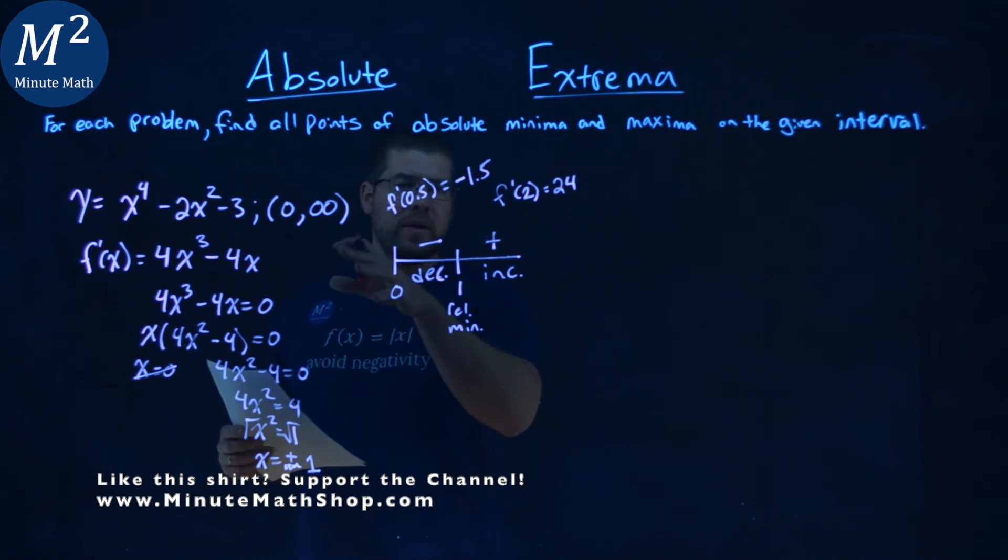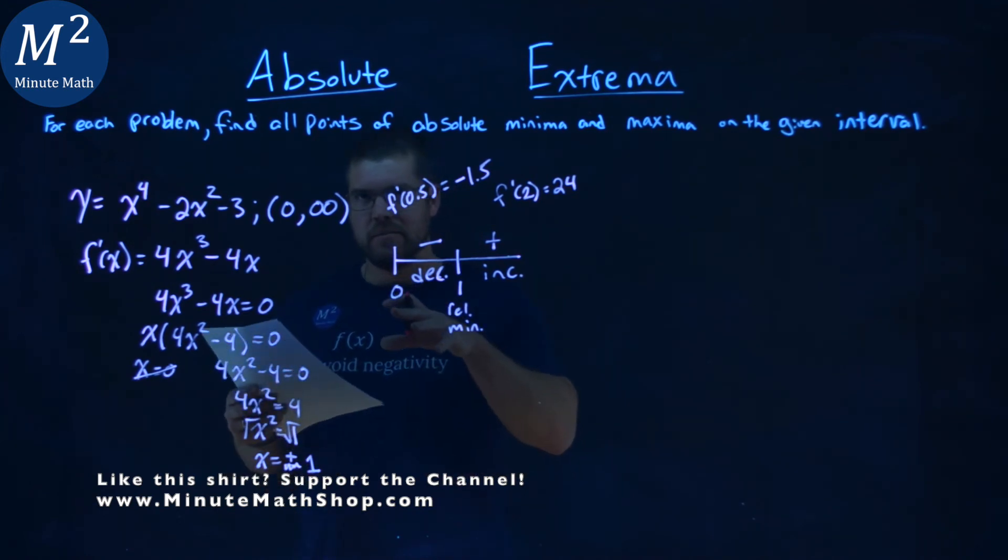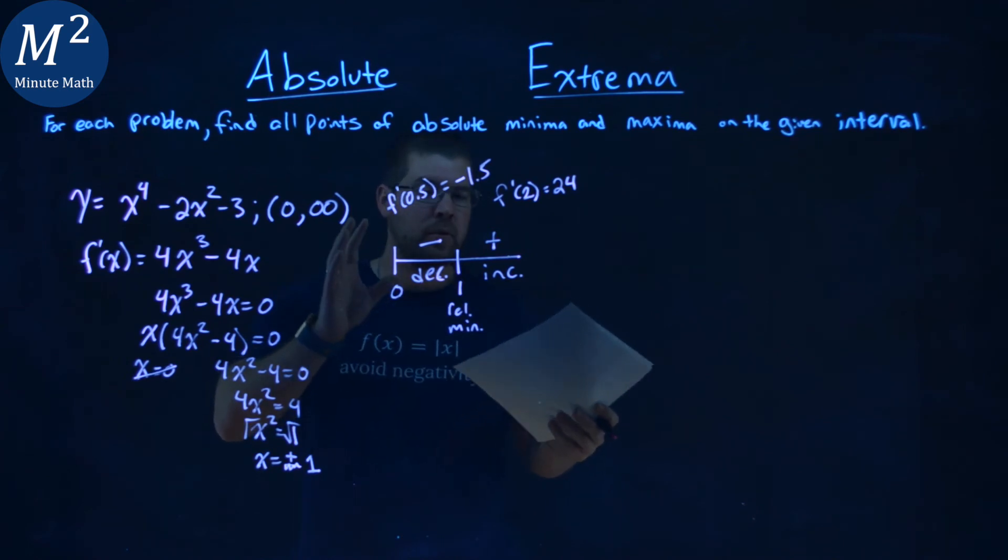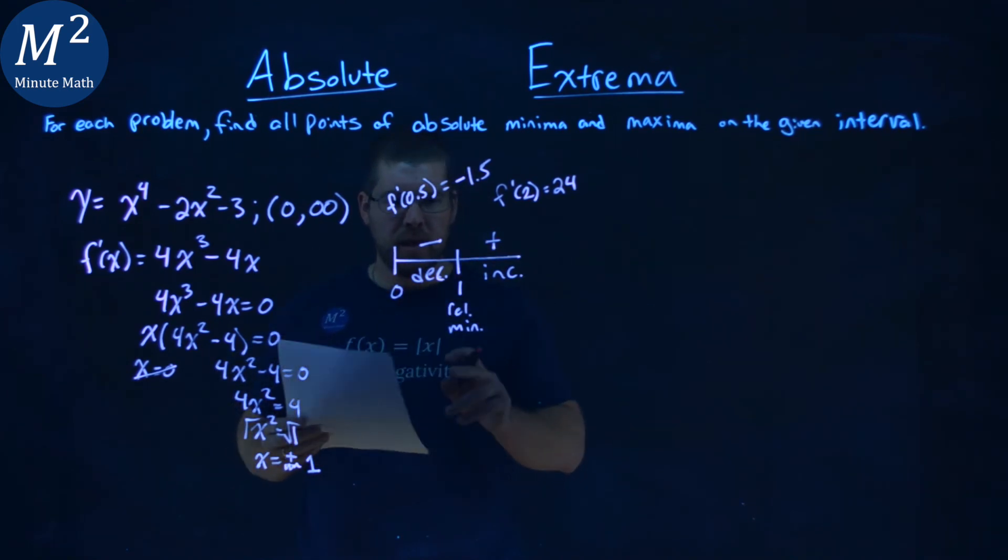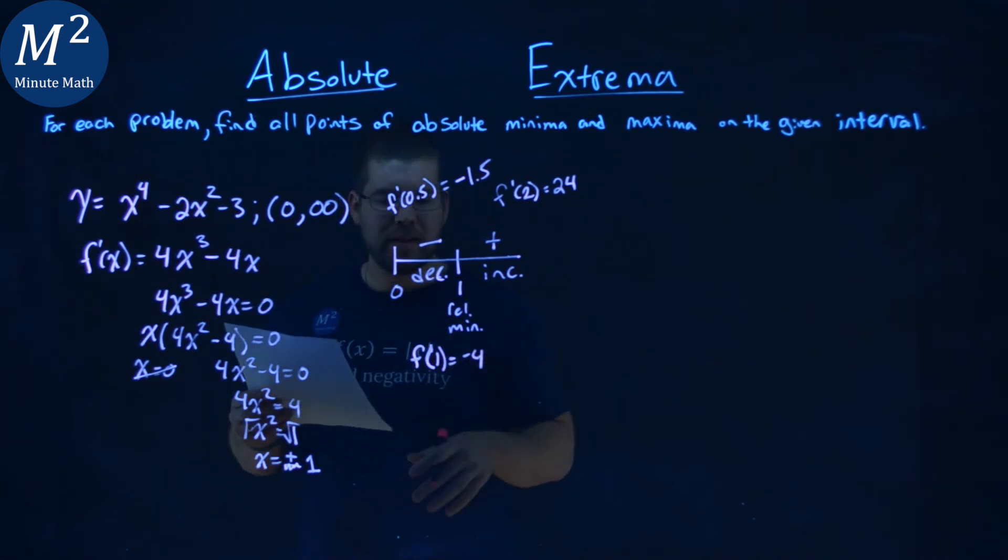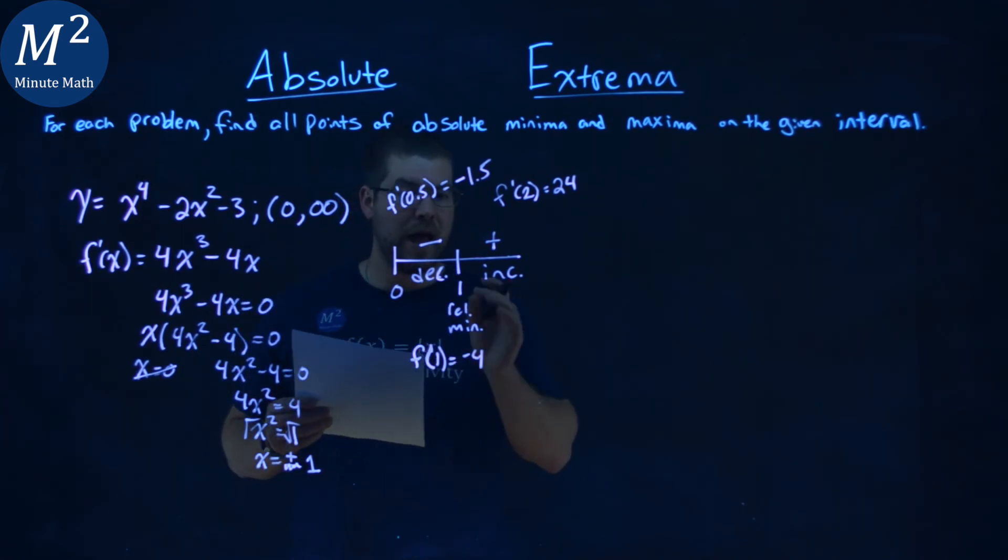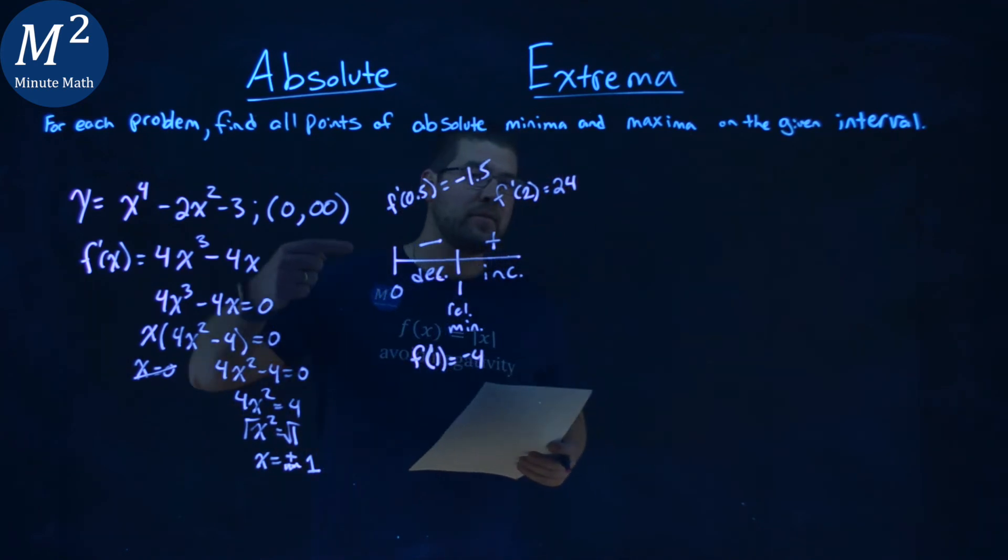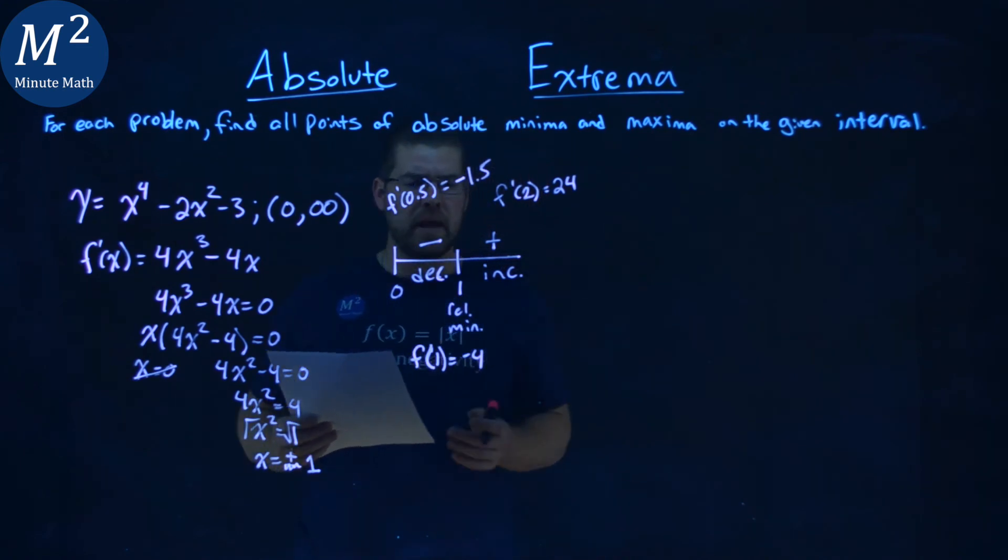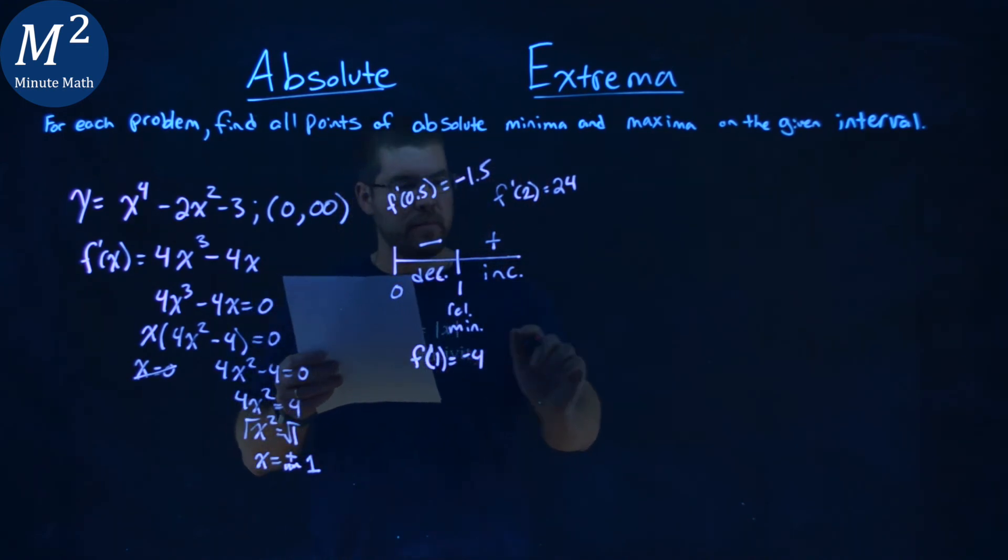Now, this endpoint we can't actually have as a value, as an absolute maximum or minimum, because it doesn't really equal that. So, I just need to check this f of 1 here. f of 1 at that value here is negative 4. And we know that's actually the absolute minimum, because to the left of it, we're decreasing down to it, and afterwards, we're increasing up to positive infinity. And so, that is our absolute minimum.